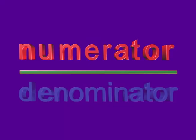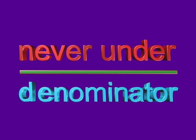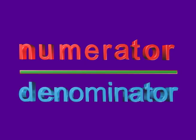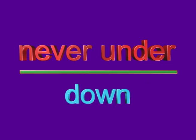Numerator starts with N, U for never under, N-U for never under. Denominator starts with D — down, D for denominator, D for down. Numerator starts with NU for never under, NU for never under. Denominator starts with D — down, D for denominator, D for down.